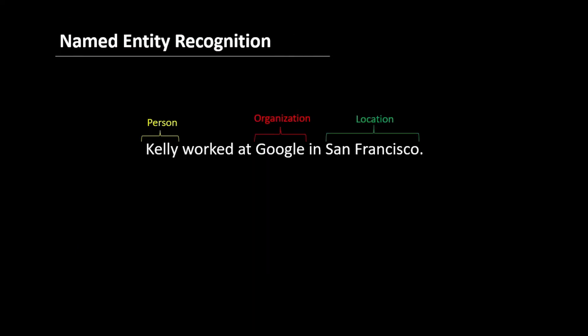Let's take an example. Let's say we are making a named entity recognition model. Now the job of this model is to identify the entities that are occurring in the given sentence. For example, this is a person, this is an organization and San Francisco is a location.